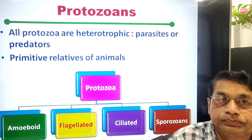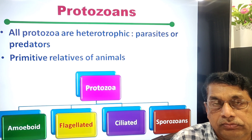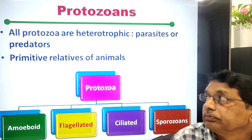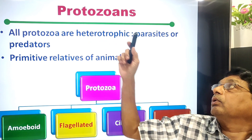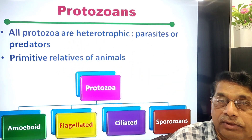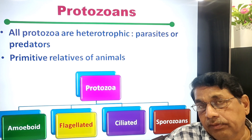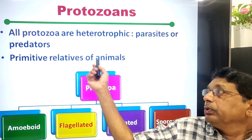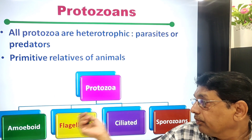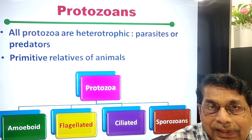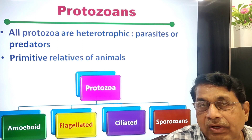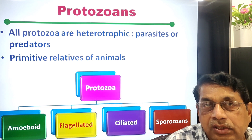Protozoa are still found in zoology textbooks in the first chapter. All are heterotrophic — some are parasitic, some are predators living on other living things. They are primitive relatives of animals. Protozoa are differentiated into four groups based on their locomotory organs: whether present or not, and if present, what type they are.